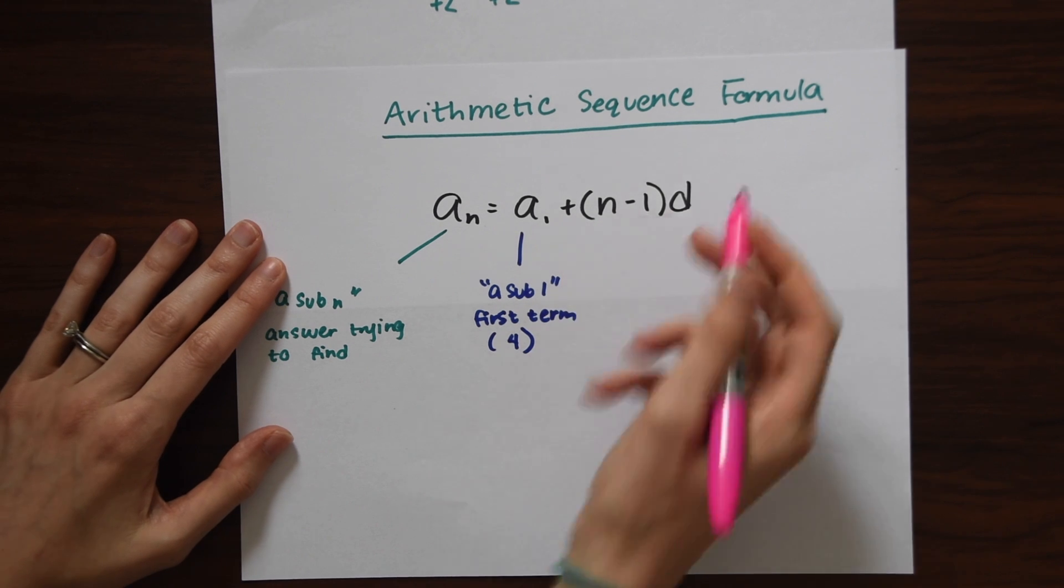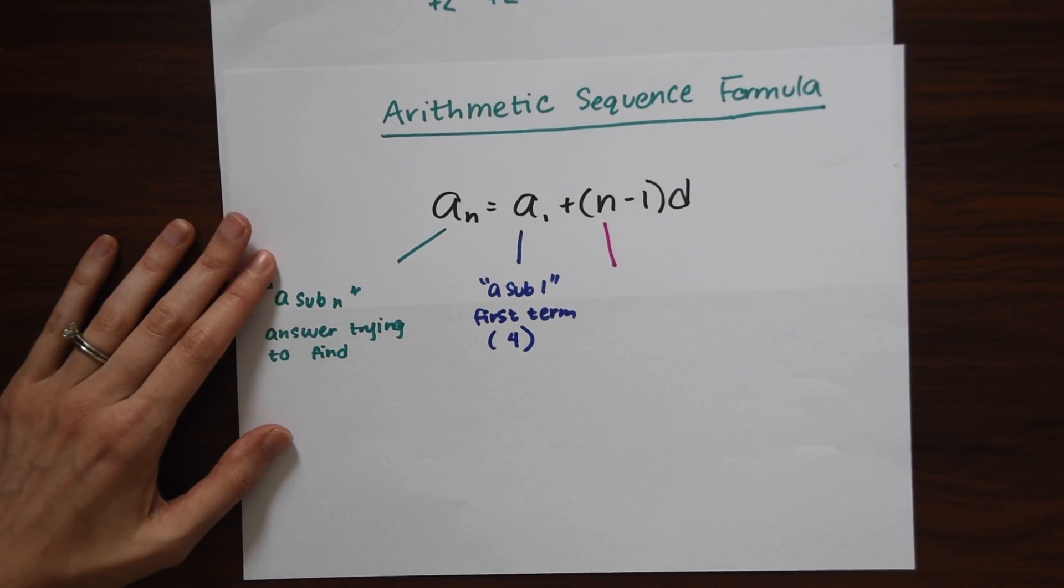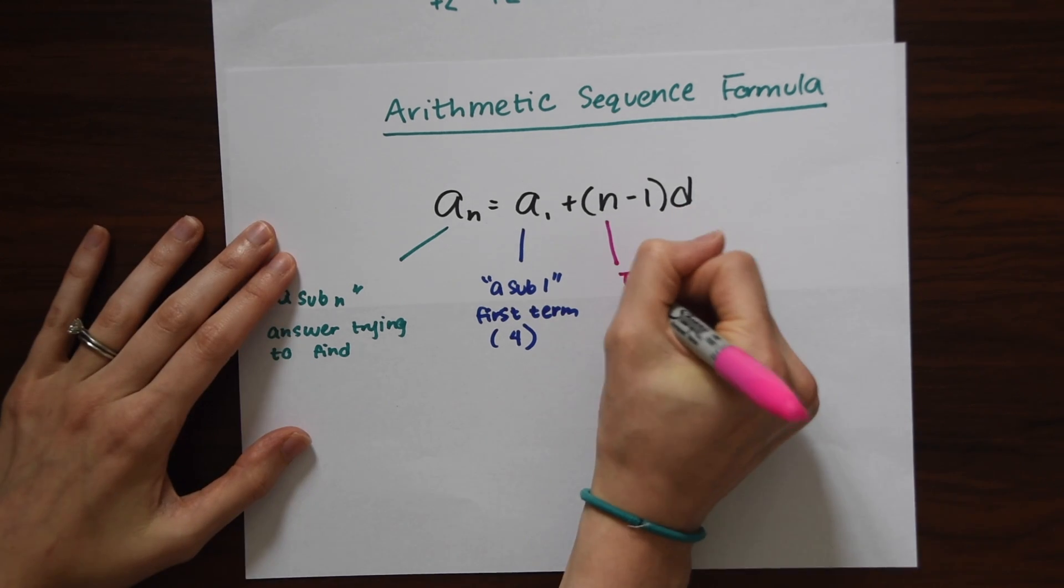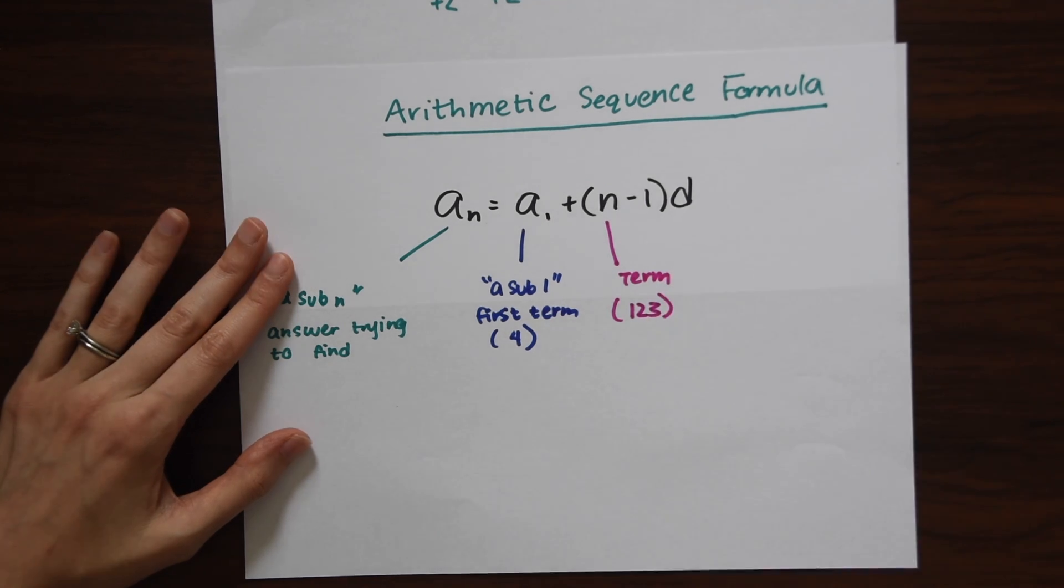So the next thing is N. This is the term number that we're trying to find within the sequence. We wanted to find the 123rd term. So this is really 123 in this case.